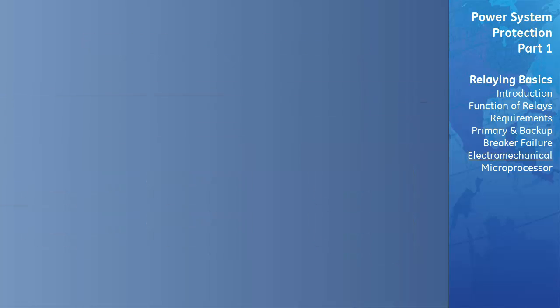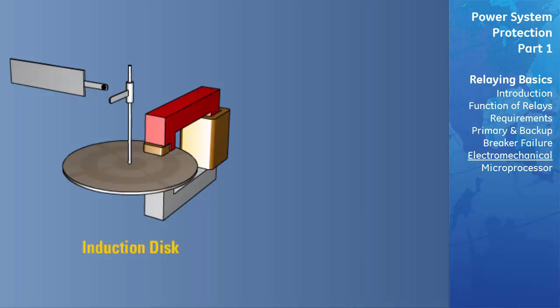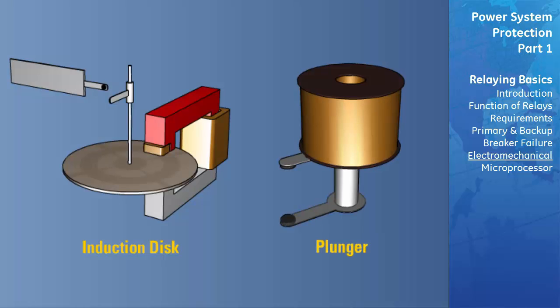In electromechanical relays, a moving part like a disc or a plunger is placed in a magnetic field produced by the input signals known as actuating signals or measured quantity. The disc or the plunger moves and touches a contact when the intensity of the magnetic field exceeds a preset limit.